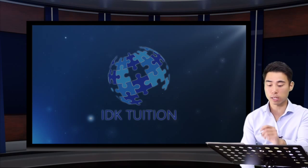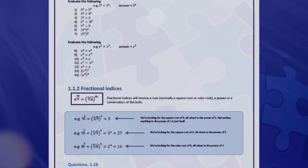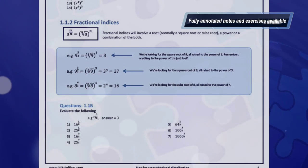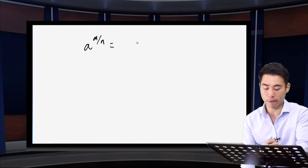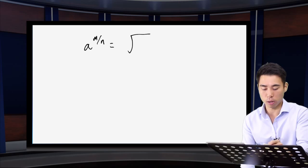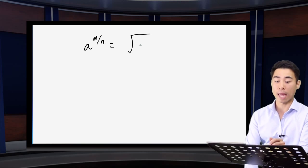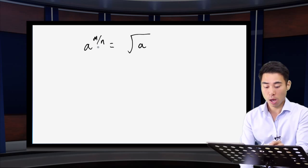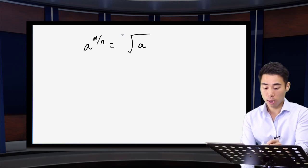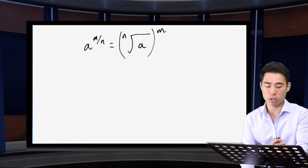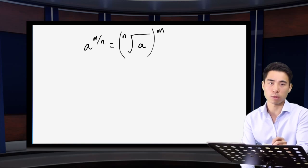Now fractional indices. Let's look at the general form of the rule. If I have A to the power of M over N, it's always going to involve a root of some kind — sometimes a square root, sometimes a cube root. The big number goes underneath the root sign, the denominator N gives the type of root, and the numerator M is the power that everything is raised to.